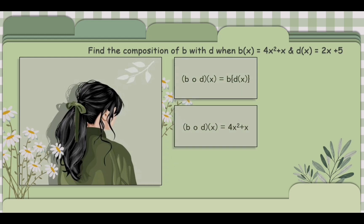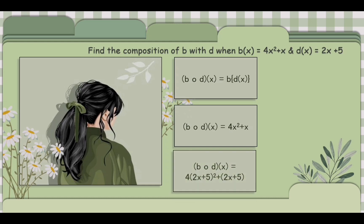First, we copy the given so it would become 4x squared plus x. After, substitute every x with the second function. So it would become 4 times the quantity 2x plus 5 squared, plus 2x plus 5.